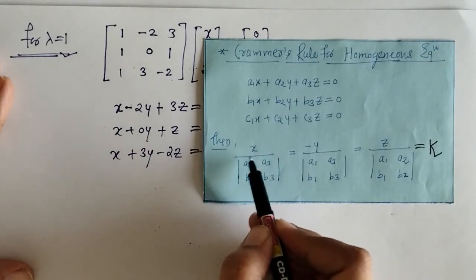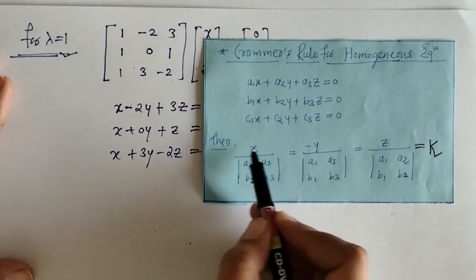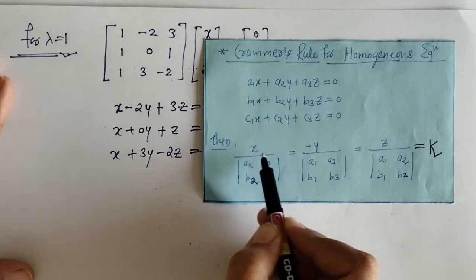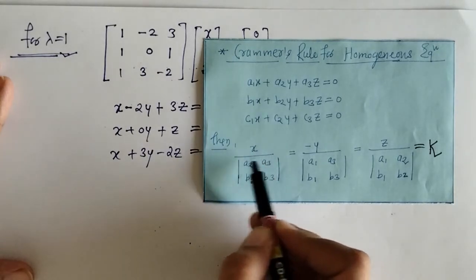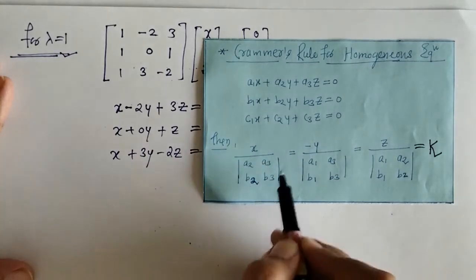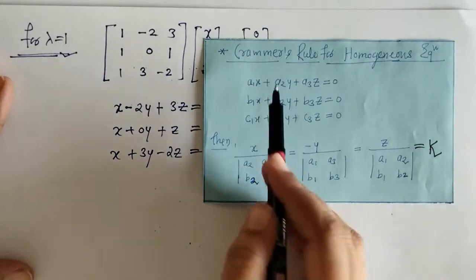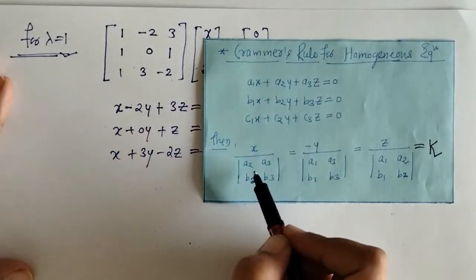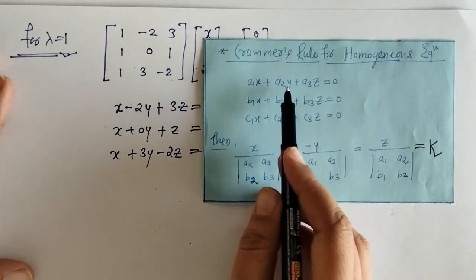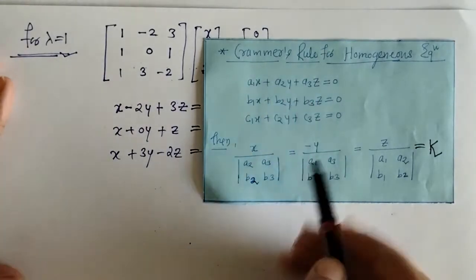To find the value of X, we write x in the numerator and the remaining coefficients of y and z in the denominator as a determinant.